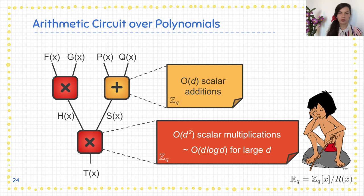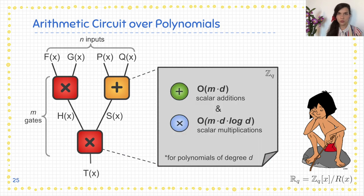Even if we apply optimized algorithms for large d, the overall conclusion is that rewriting such a circuit for n inputs and m gates into a computation over Z_q has a lot of overhead and a dependence on degree d of the polynomials, and we would like to get rid of this dependence.